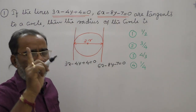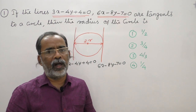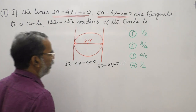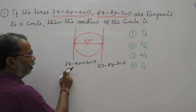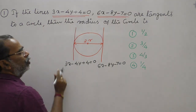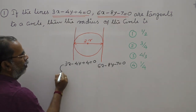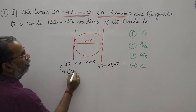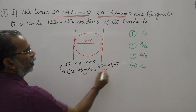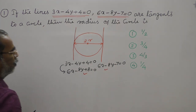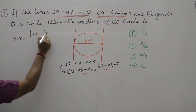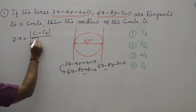In straight lines we have seen the formula: distance between two parallel lines is mod c1 minus c2 by root over a squared plus b squared. That formula is applicable when the x-y part is the same. Here that part is different, so I will multiply the first equation by two: six x minus eight y plus eight equals zero. Now taking these two equations, diameter equals mod c1 minus c2 by root over a squared plus b squared.